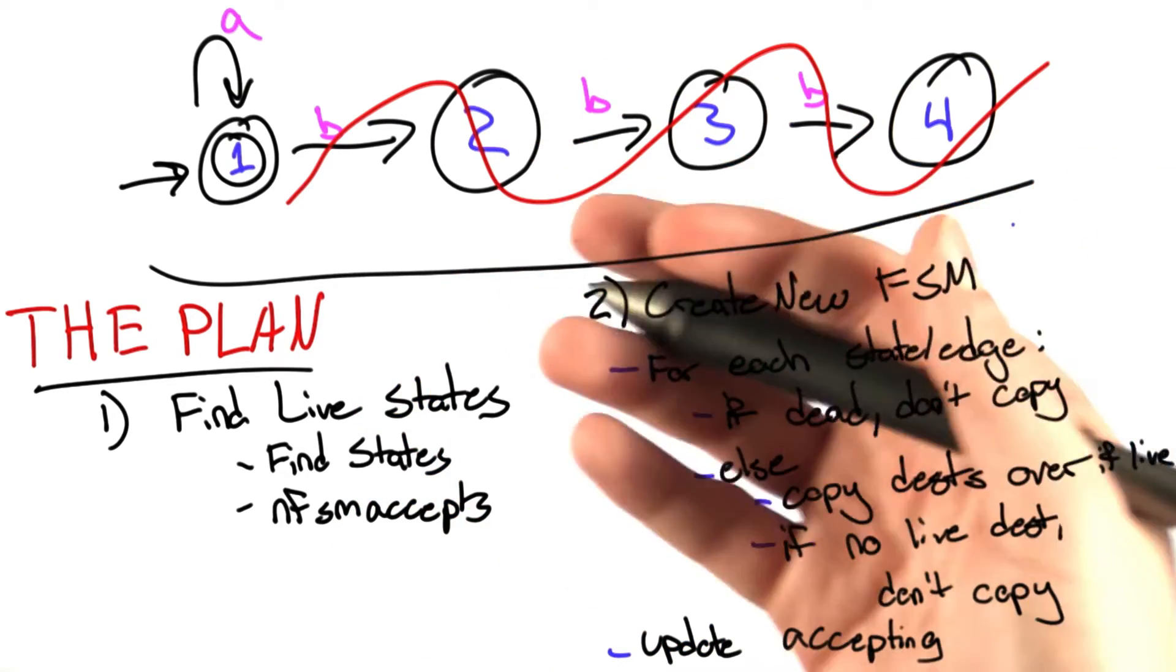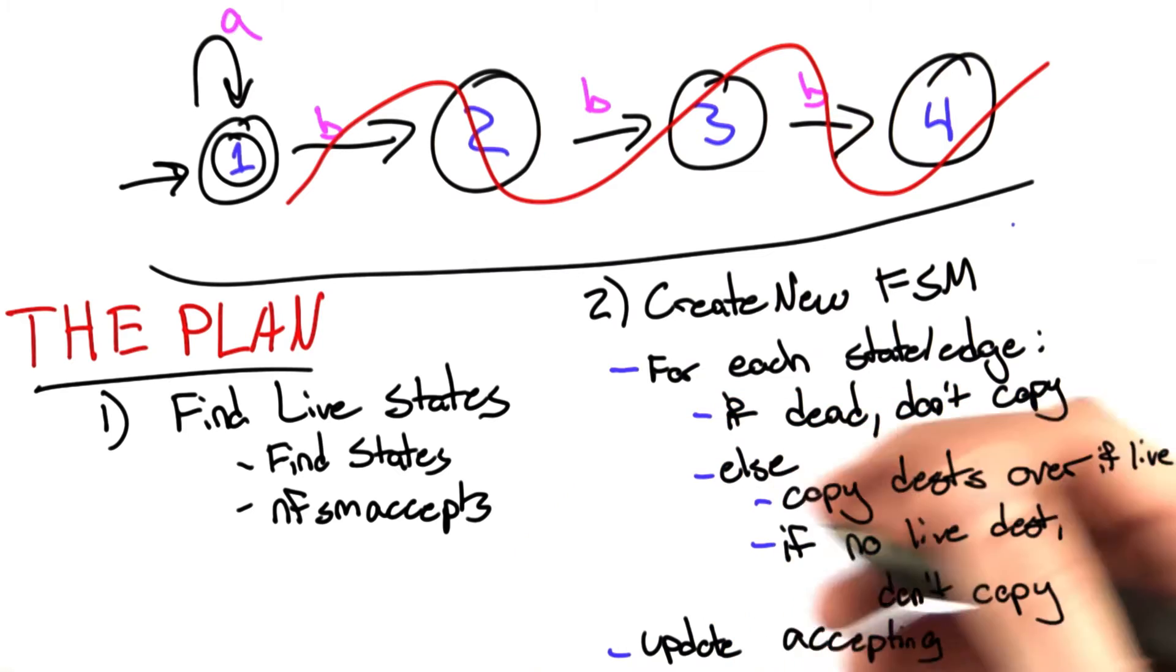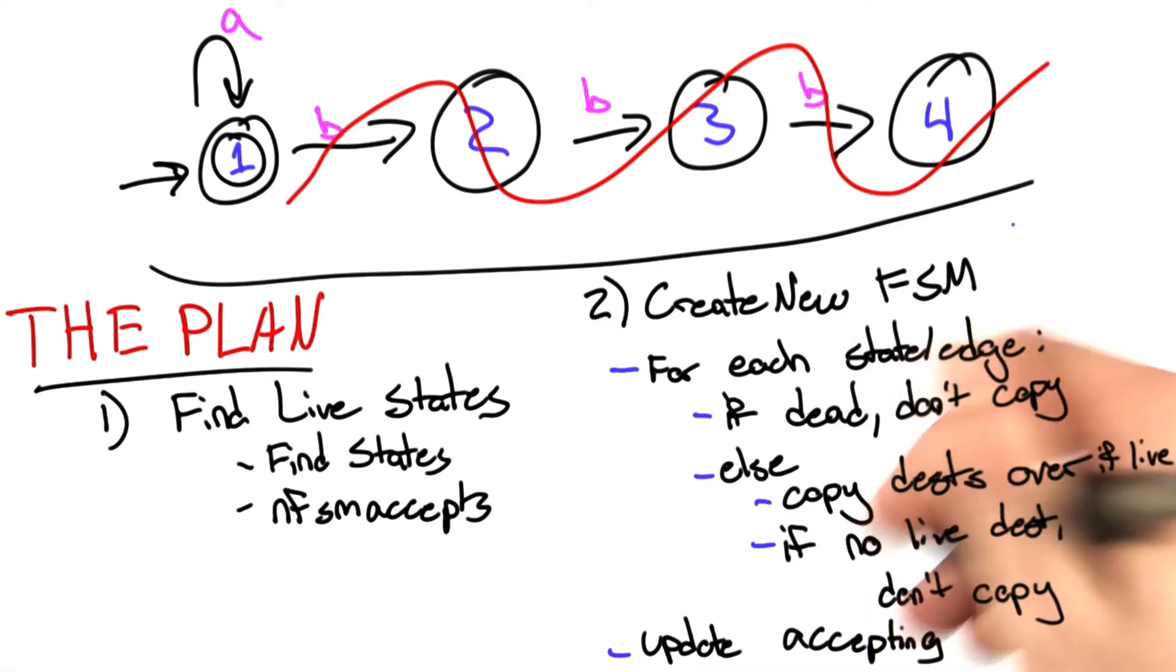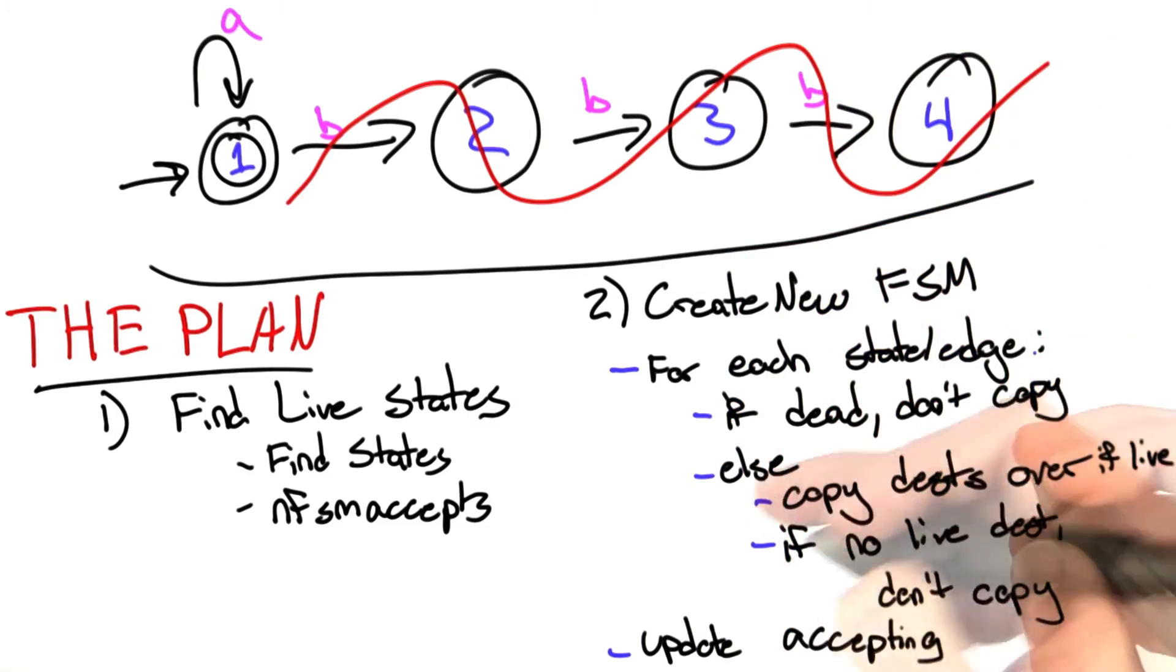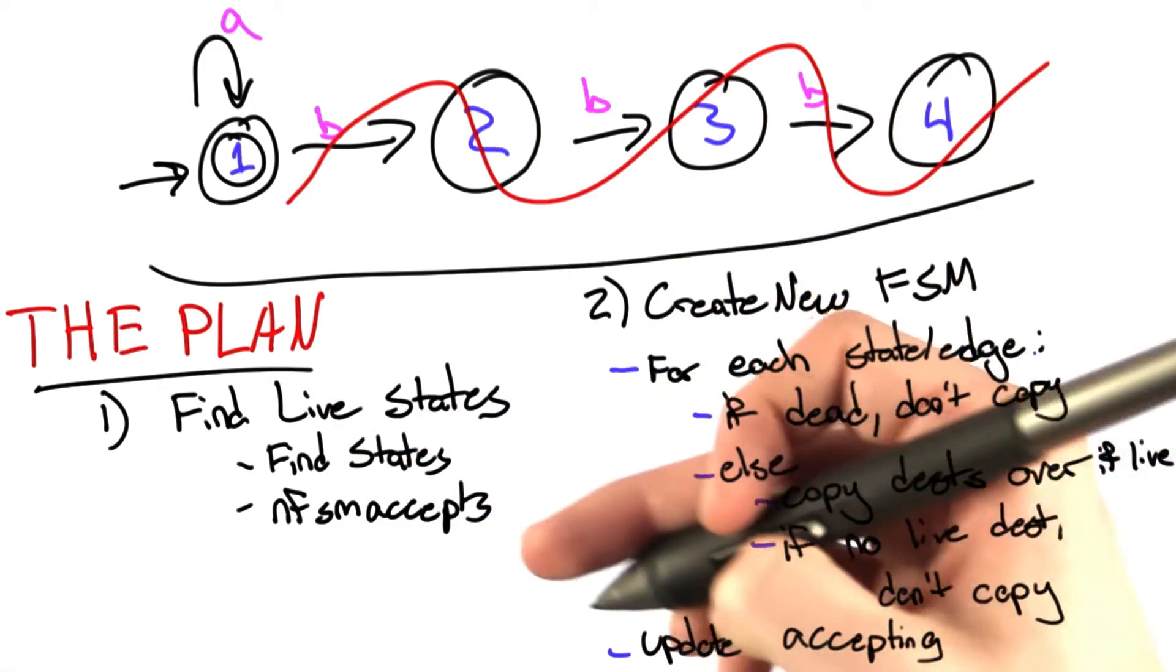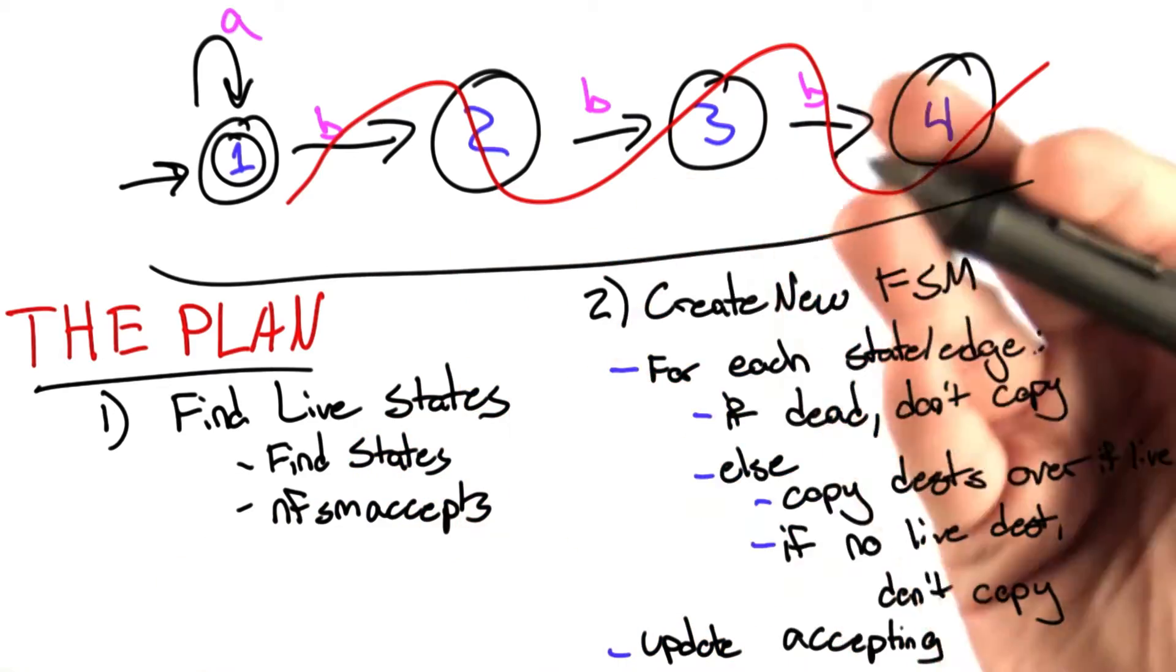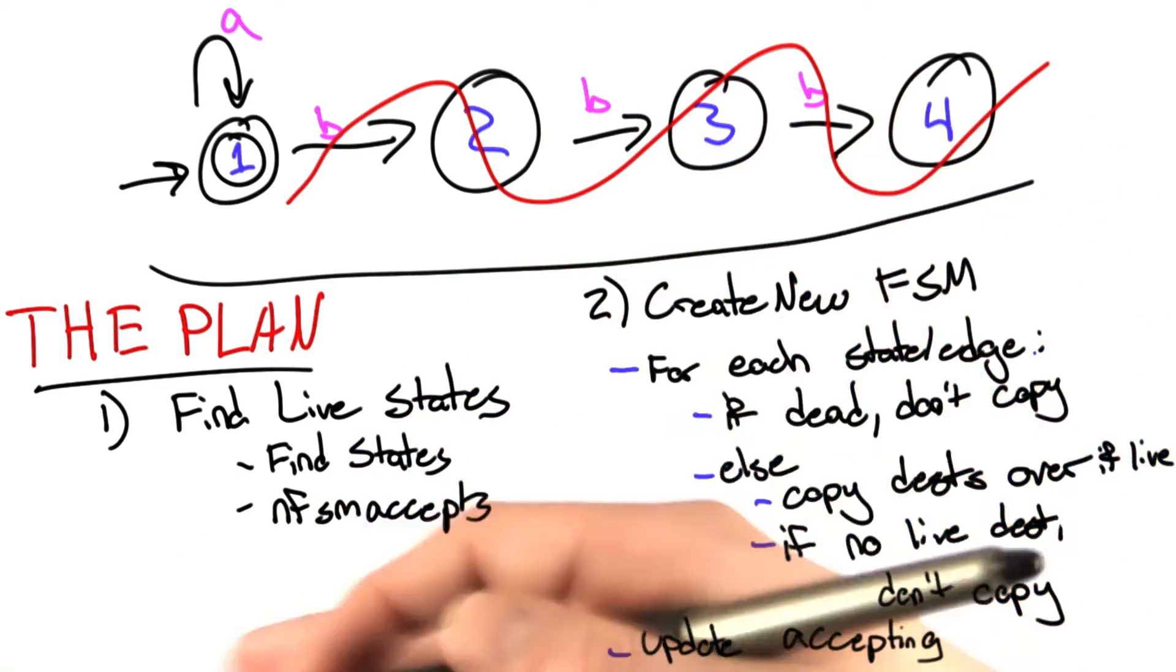If there are none that are still alive, we're going to remove that edge completely. We're not going to copy it into the new one. And once we've repeated that process and every state edge thing in the graph, we're going to update our accepting state list accordingly. We don't want to have any accepting states that are dead.